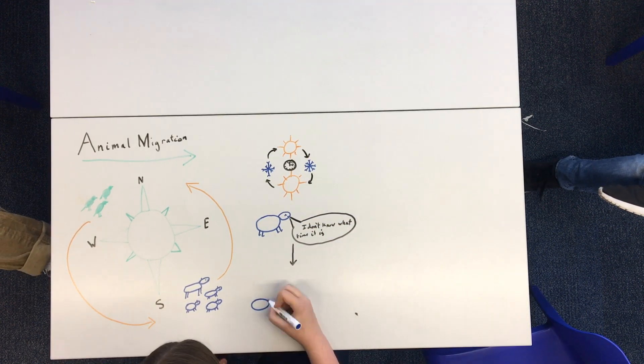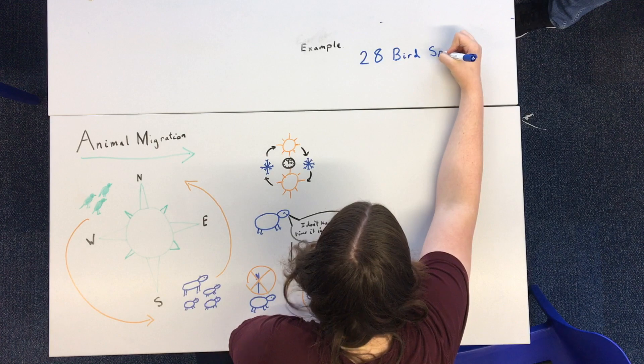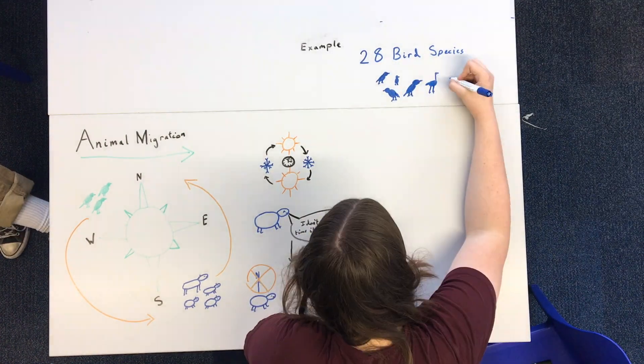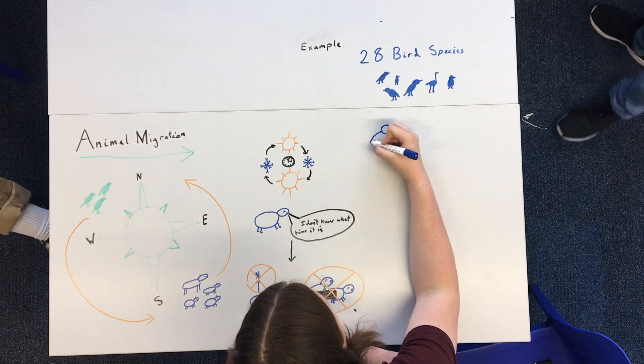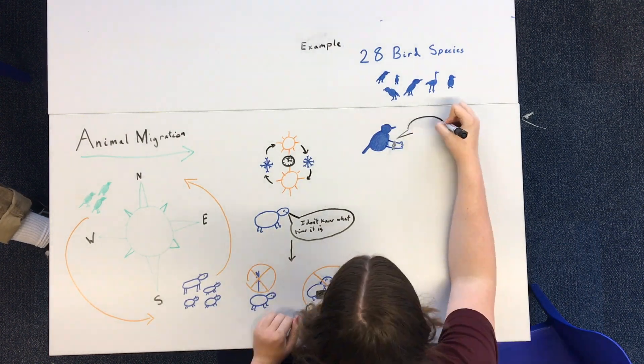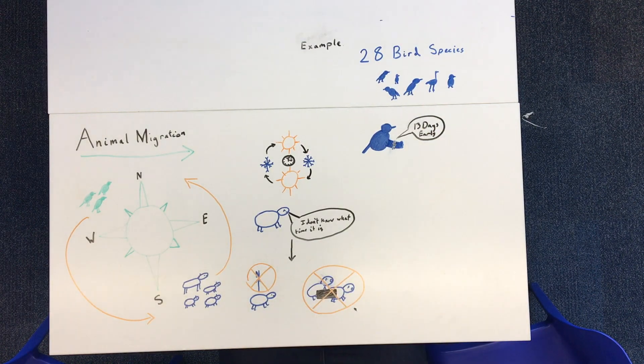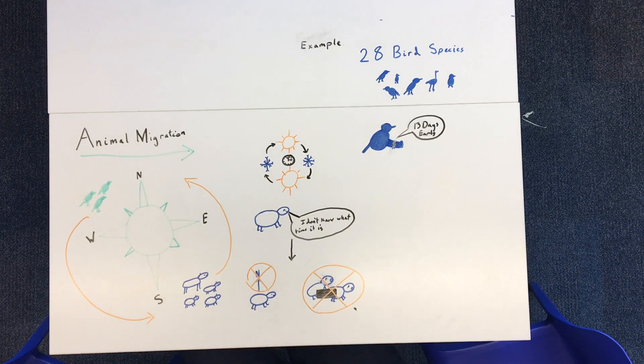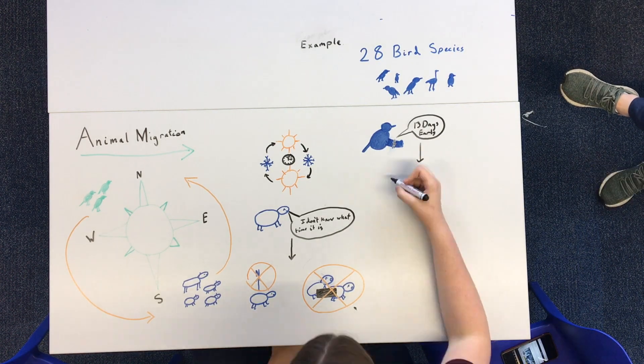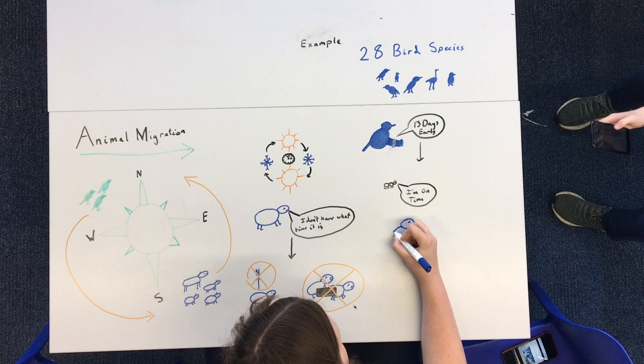To quote a statistic by the US Environmental Protection Agency, 28 species of migratory birds that winter in the south are returning north 13 days earlier in spring than a century ago. Moreover, the arrival of 16 out of 23 butterfly species in California has been recorded as early. So these changes in migratory patterns aren't inherently bad, but they might not be matched by the availability of food sources or pest avoidance. So there could be higher mortality rates in migrating species as a result.